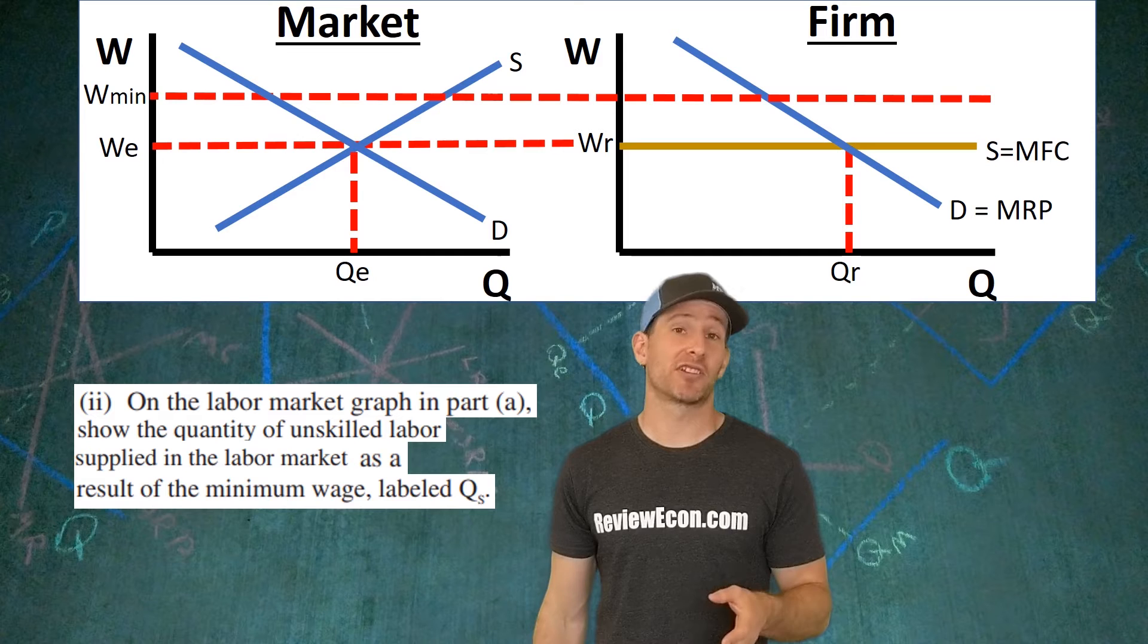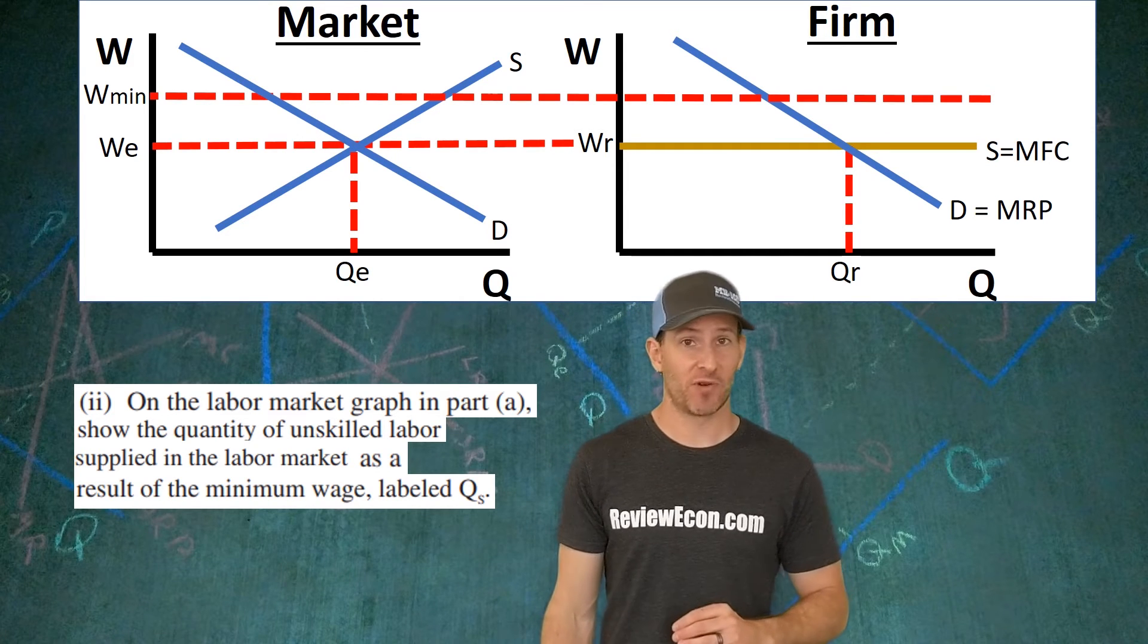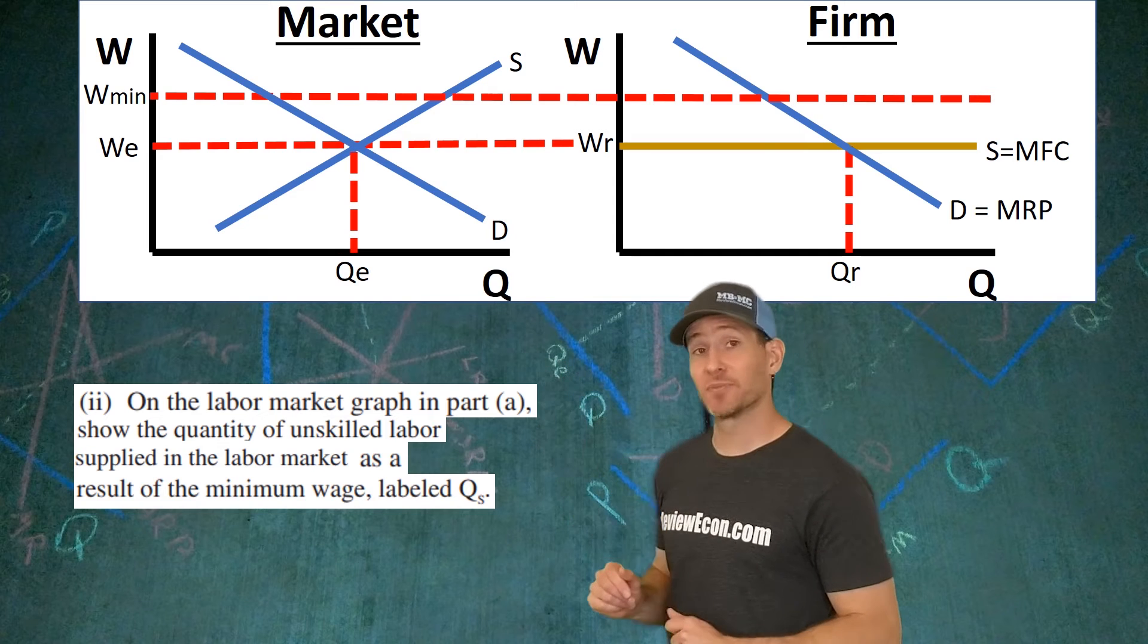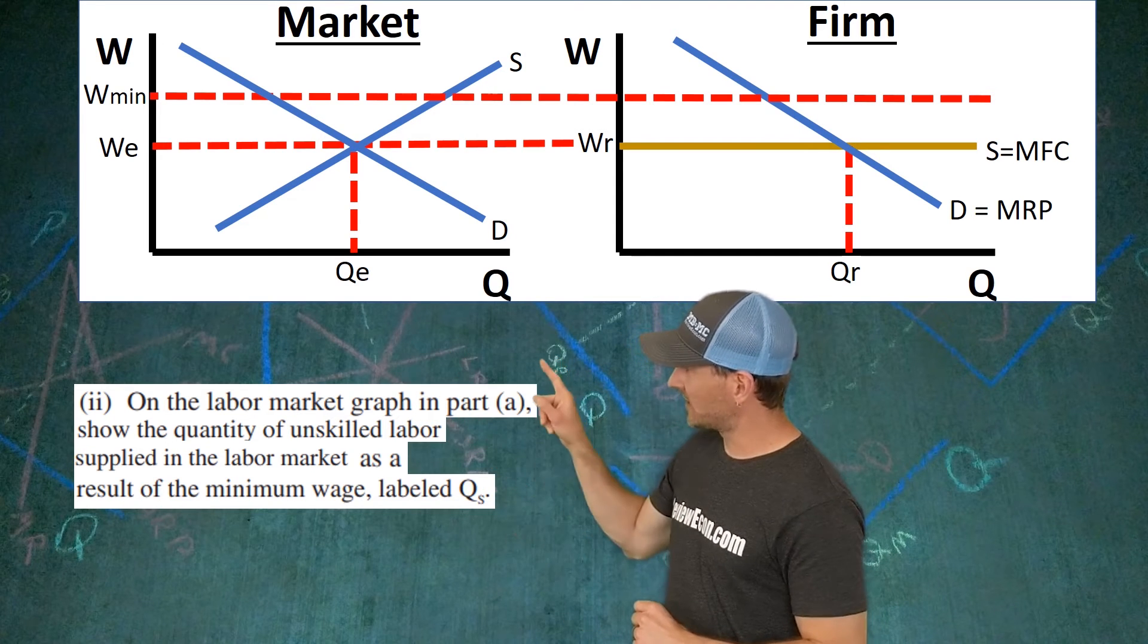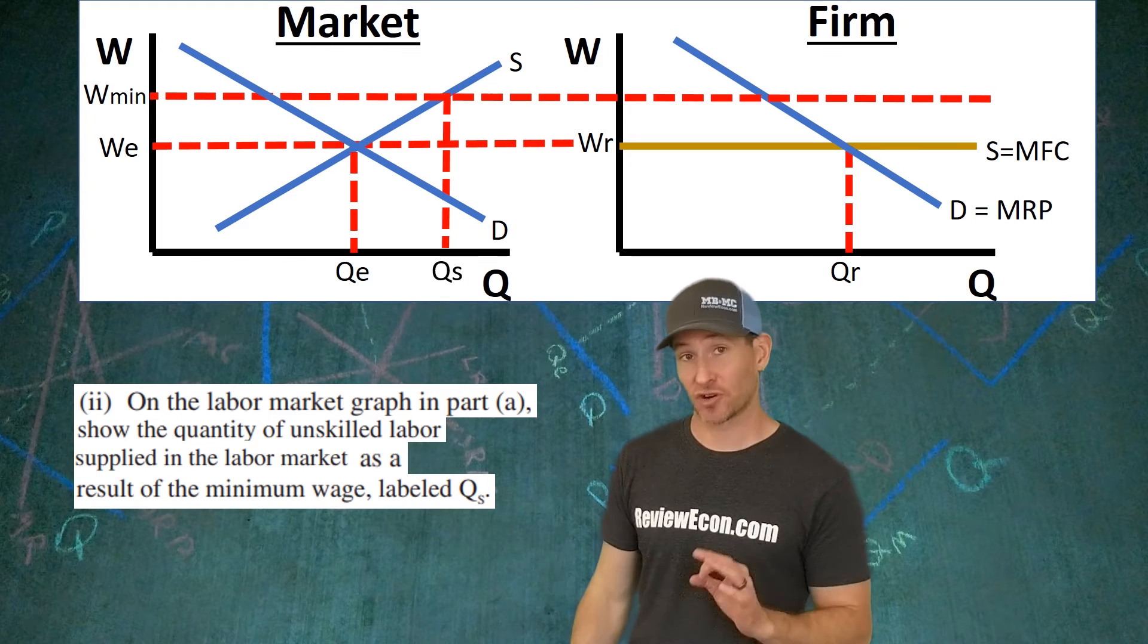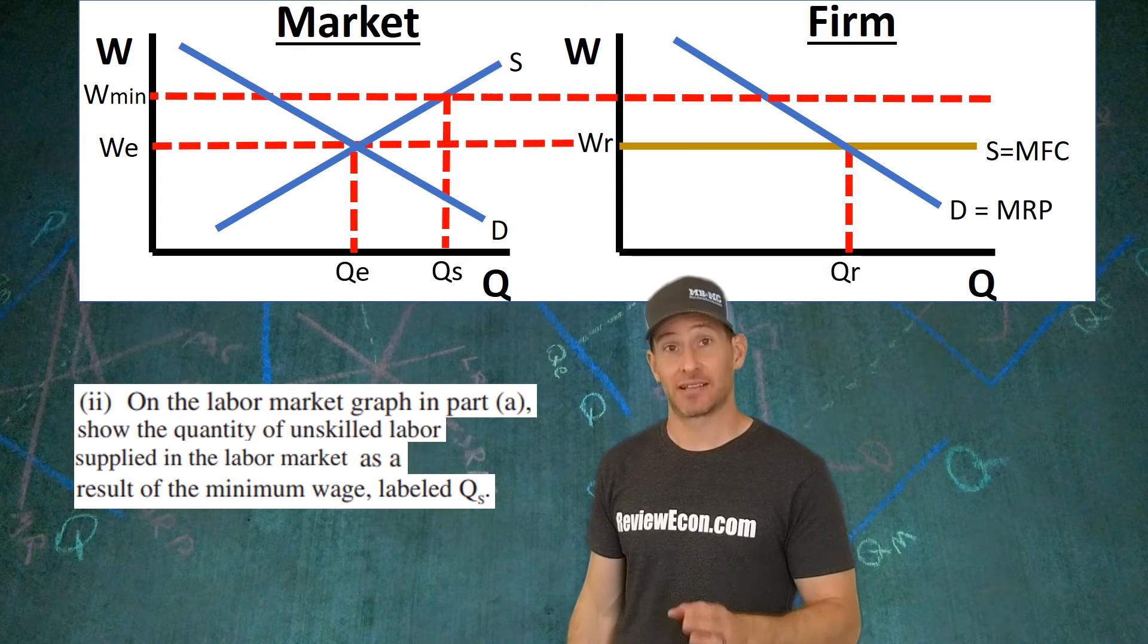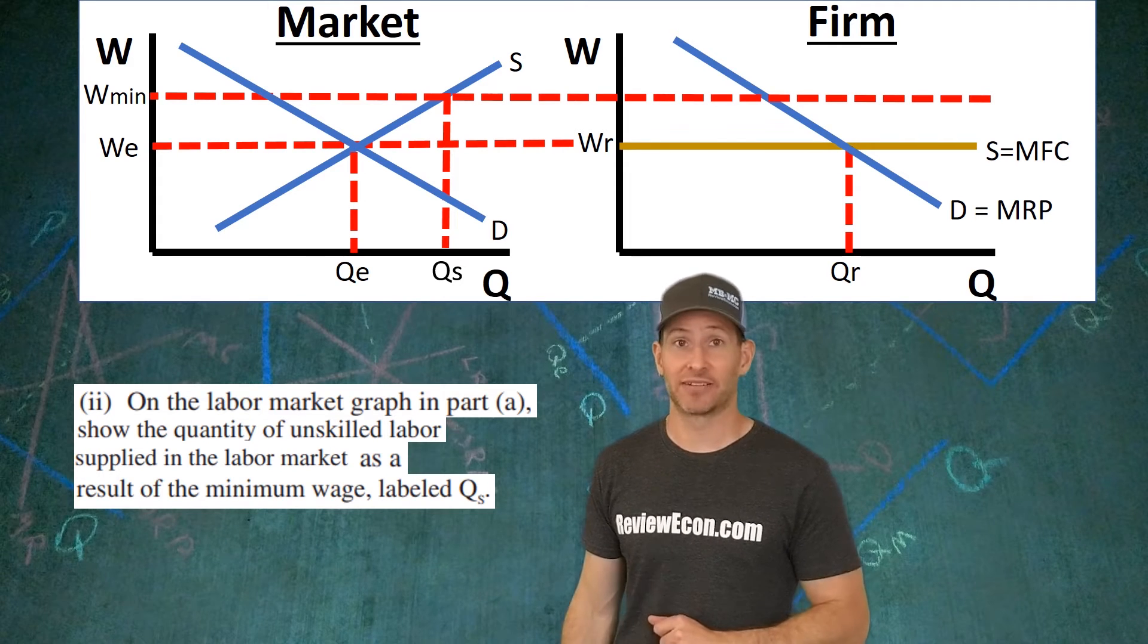For the second part of C, we need to show the quantity of labor supplied at the new equilibrium wage. From that equilibrium wage, the new minimum wage, you go across until you hit that supply curve. Drop down, that is your quantity supplied at the new effective minimum wage. Get that all together, and you've got your point here.